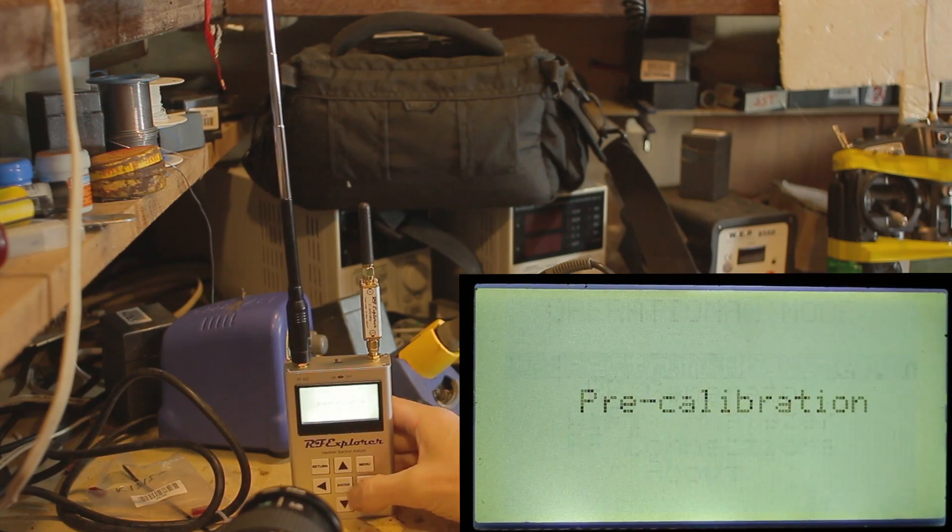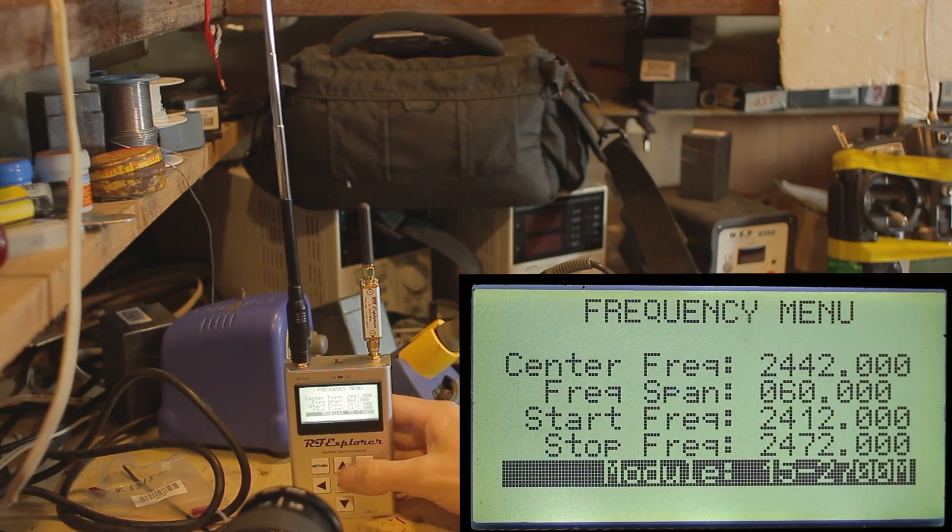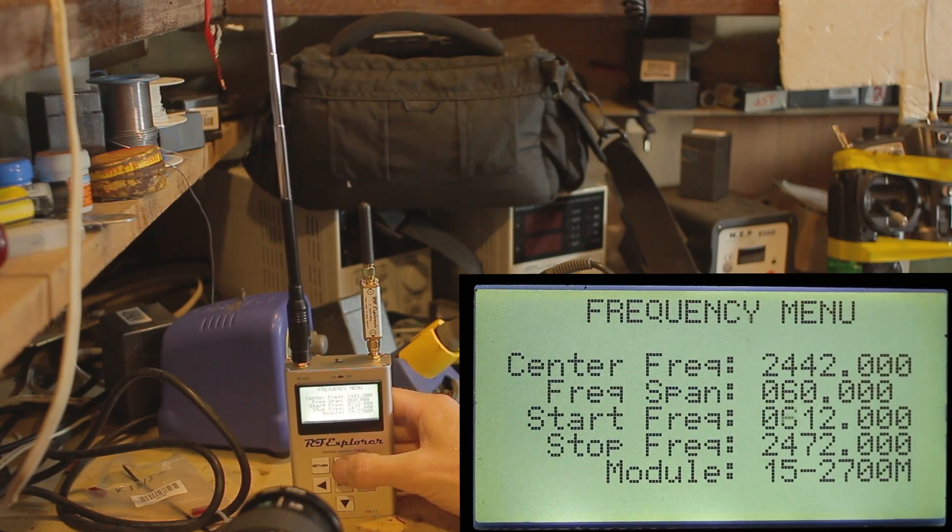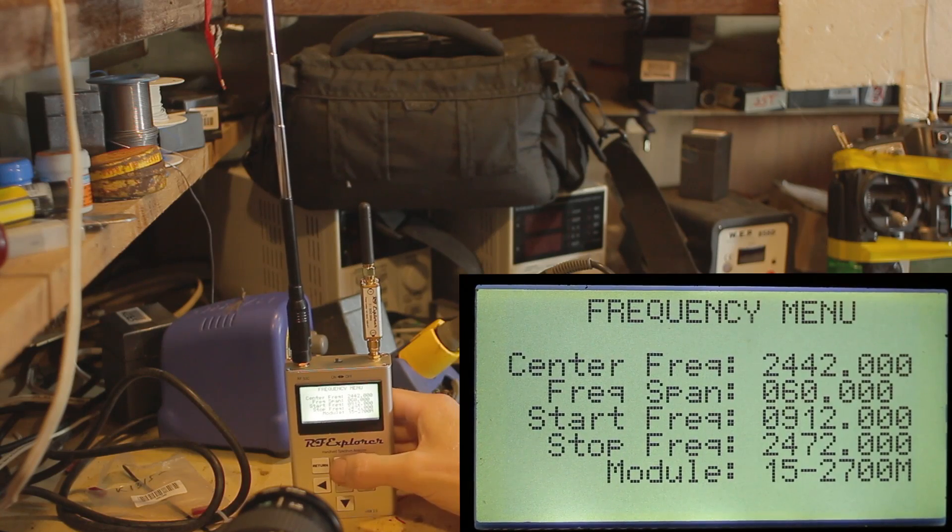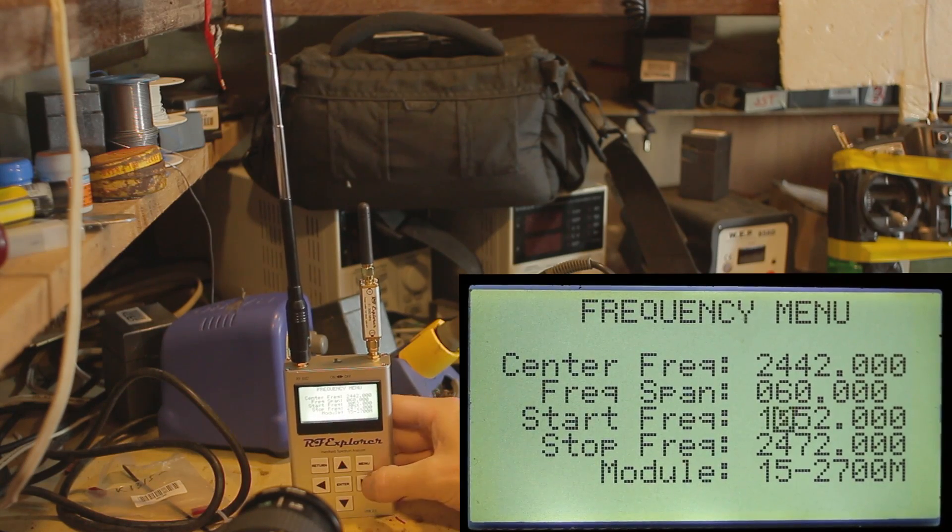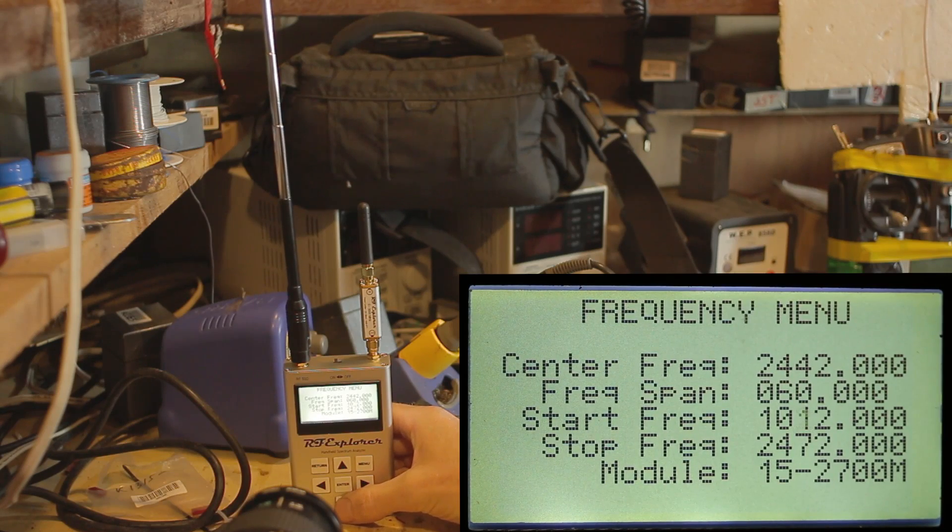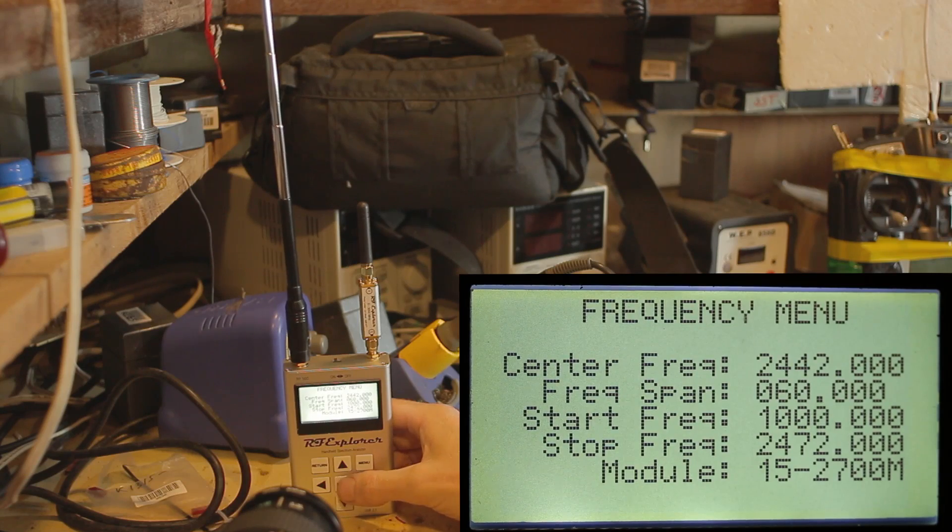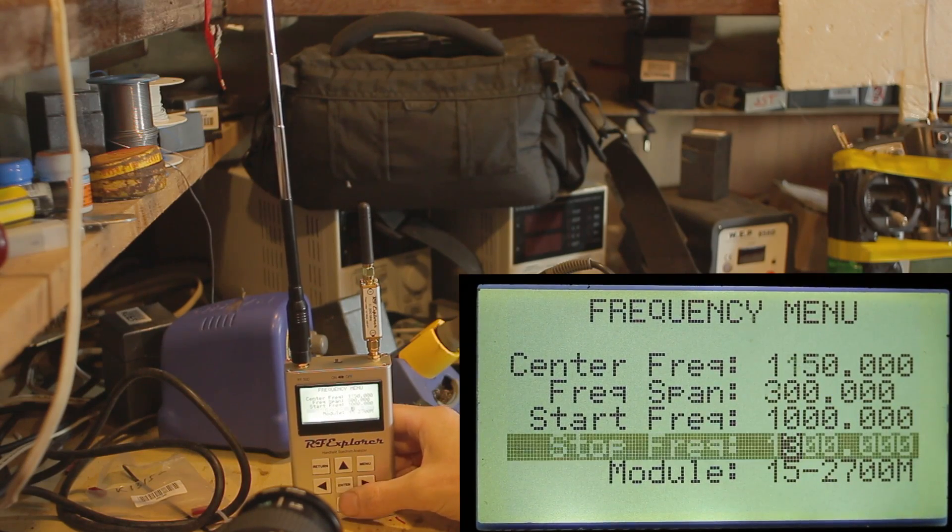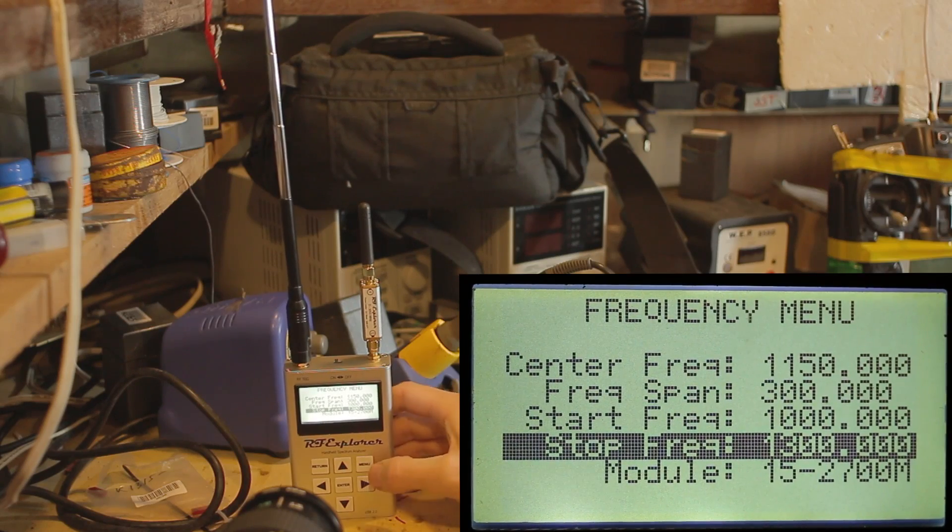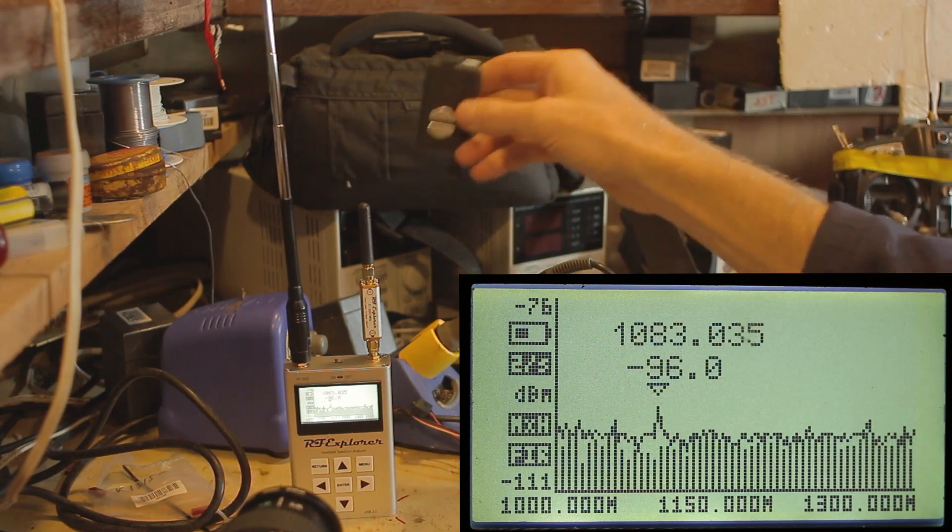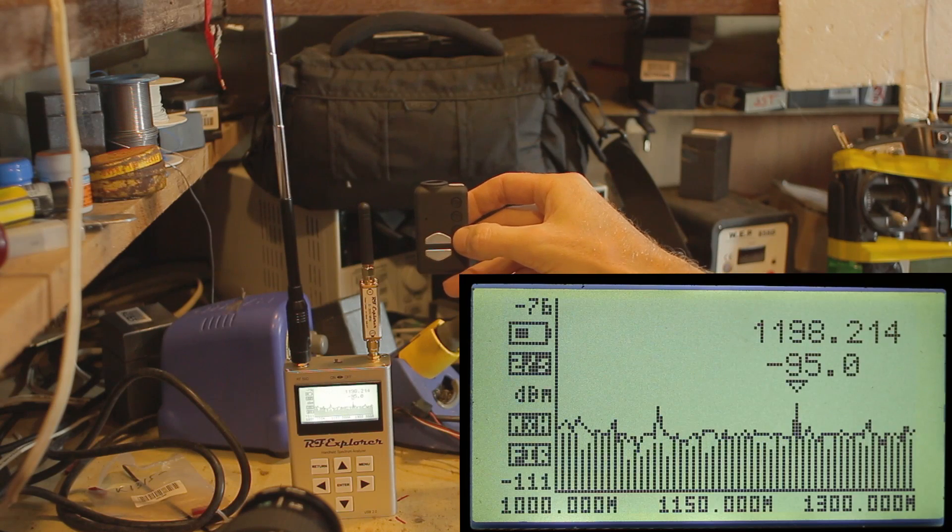Let's try changing the frequency. Let's change it from 900, actually let's make it a thousand, 1 to 1.3 gigahertz, let's try that. This is typical frequencies that you might use if you're transmitting video.